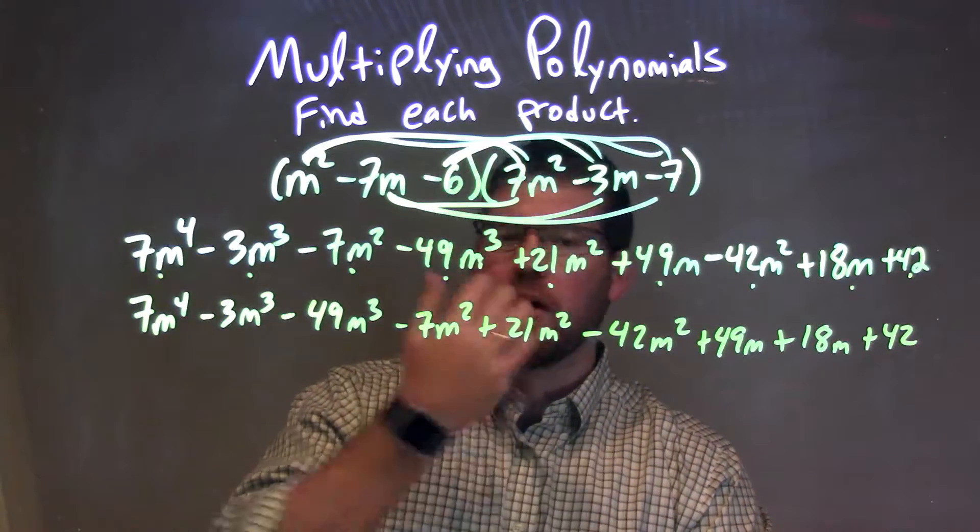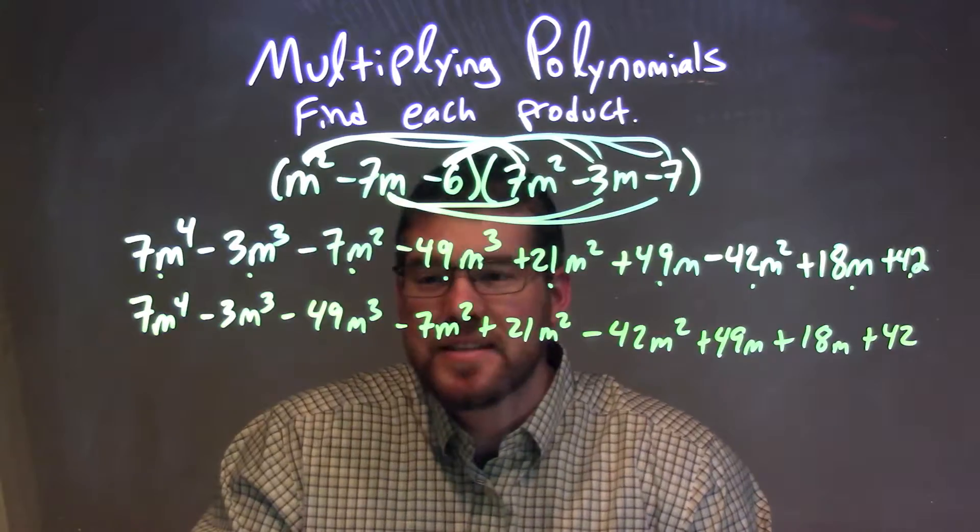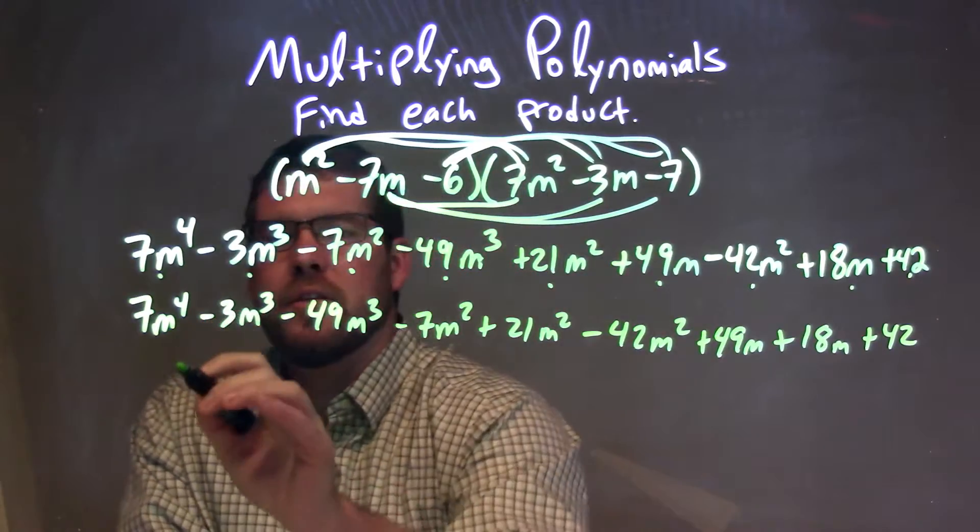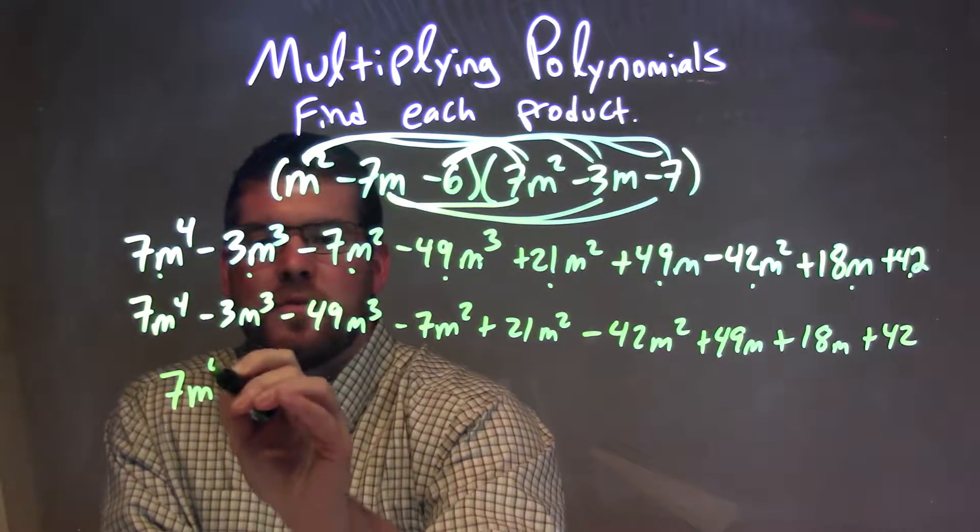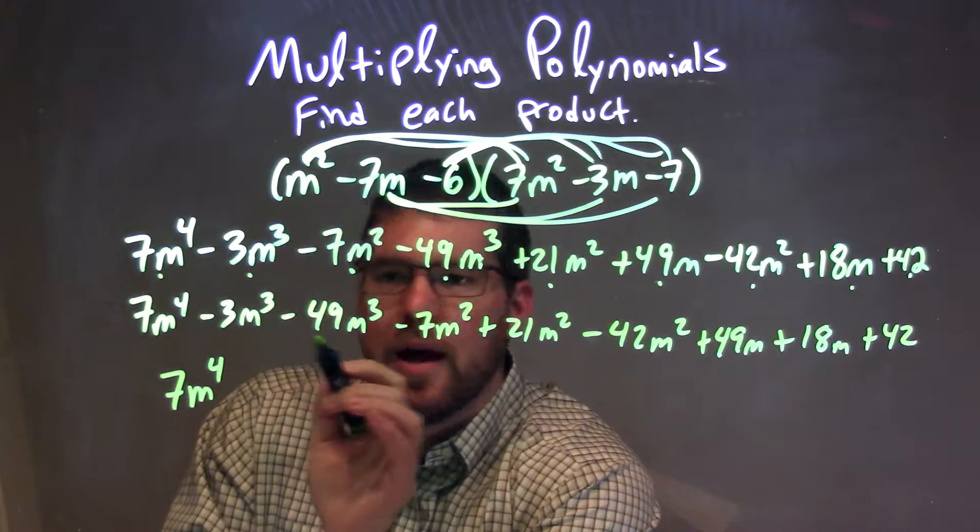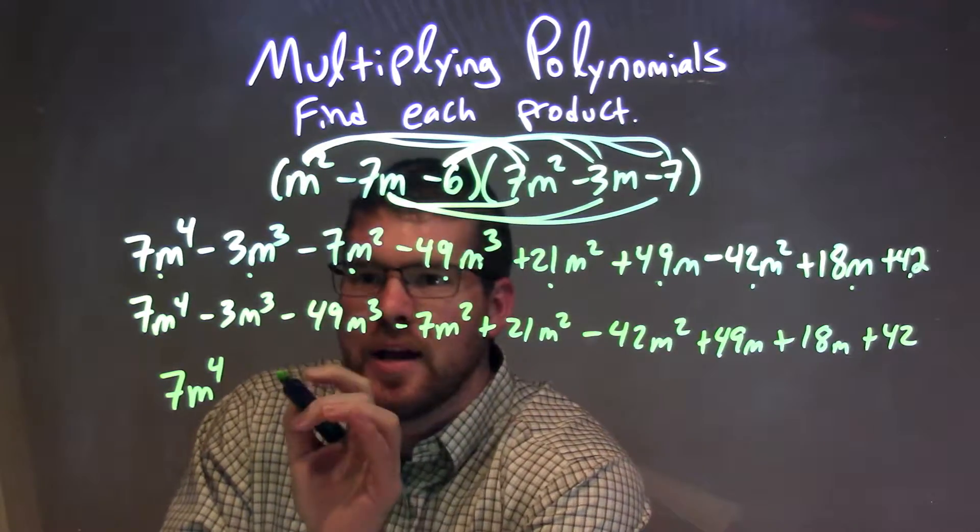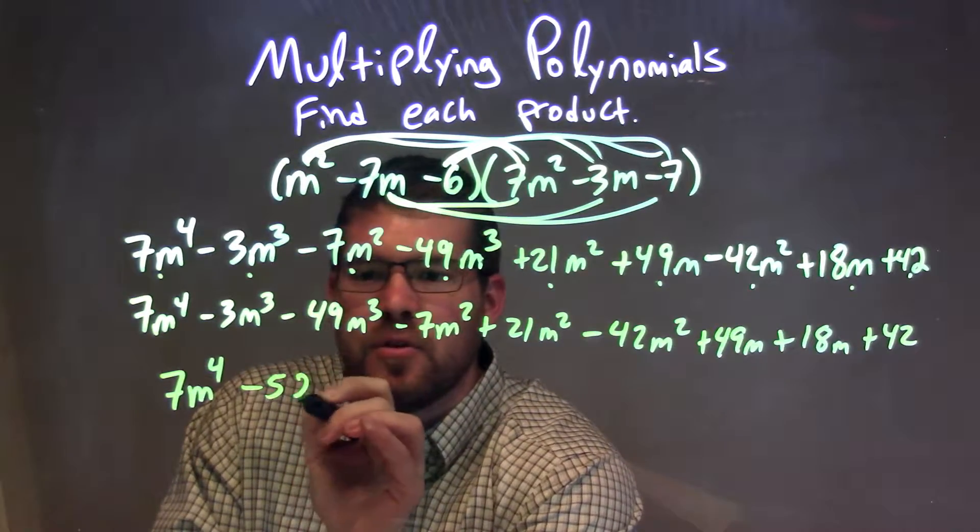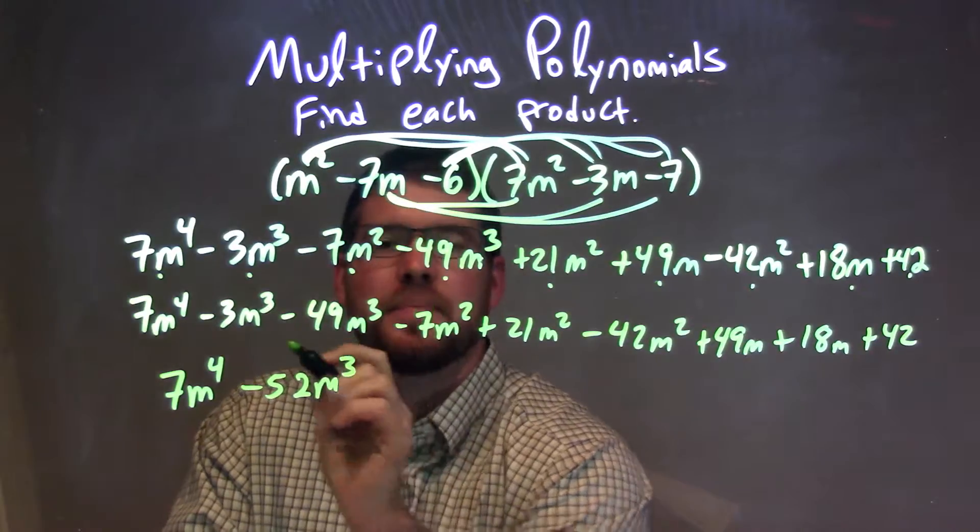Okay, so we have all parts being brought down. So now we just have to combine our like terms. Fourth power: 7m to the fourth. Then minus 3m minus 49m to the third is minus 52m to the third power.